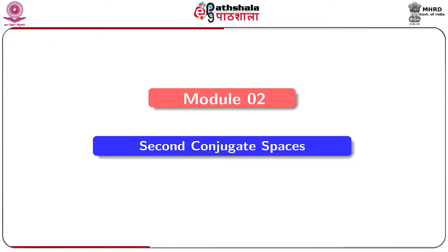In the study of first conjugate spaces, isometric isomorphism definitions and their properties are needed. Today we shall discuss second conjugate spaces — how the second conjugate spaces are constructed. If we take a normed linear space X, we can construct its first conjugate space X' and similarly its second dual X'', and continuing this way we can construct further conjugate spaces. We are now going to start the properties of second conjugate spaces. The title of module 2 is second conjugate spaces.